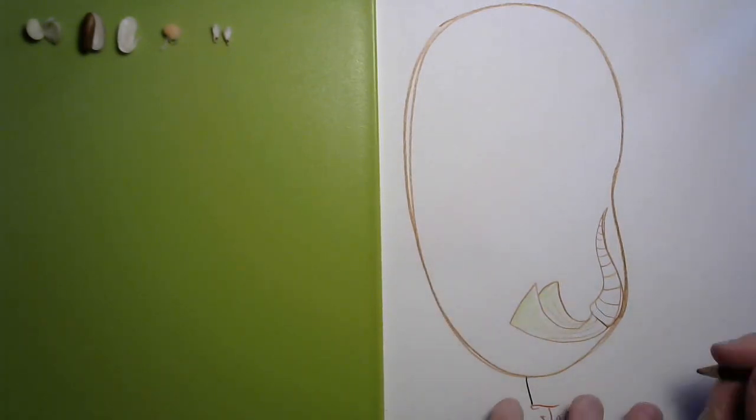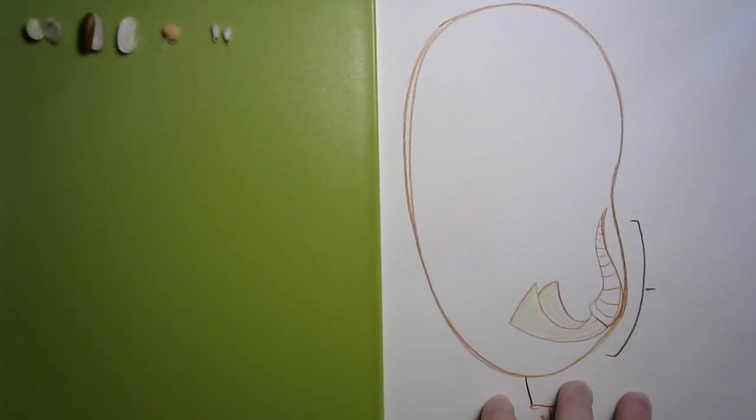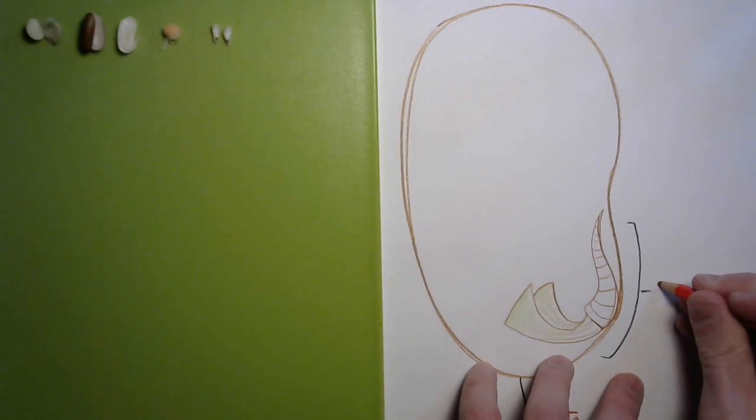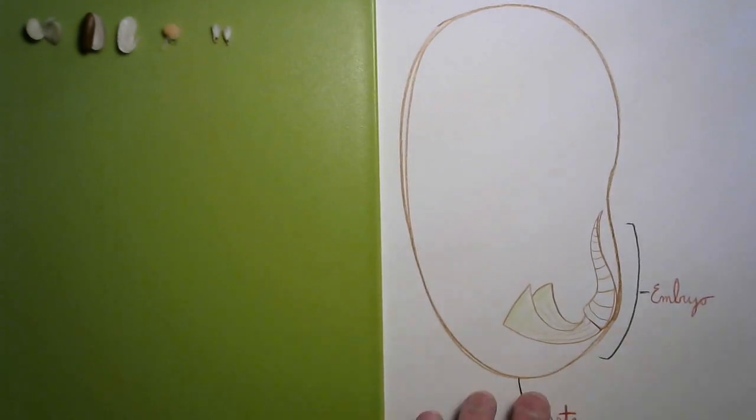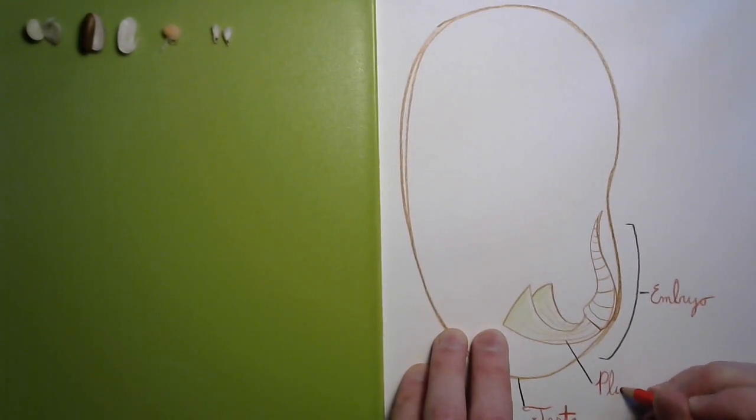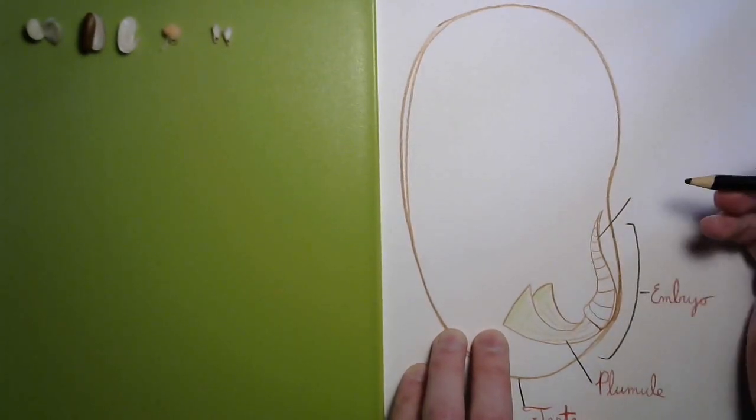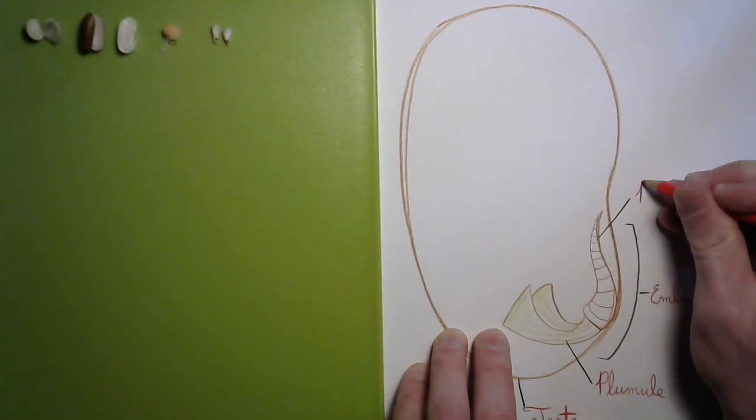Let's go ahead and label this entire piece as being the embryo. And then we can label the plumule and radical separately. And the radical. Radical actually comes from a word radix, which means root. How radical is that?